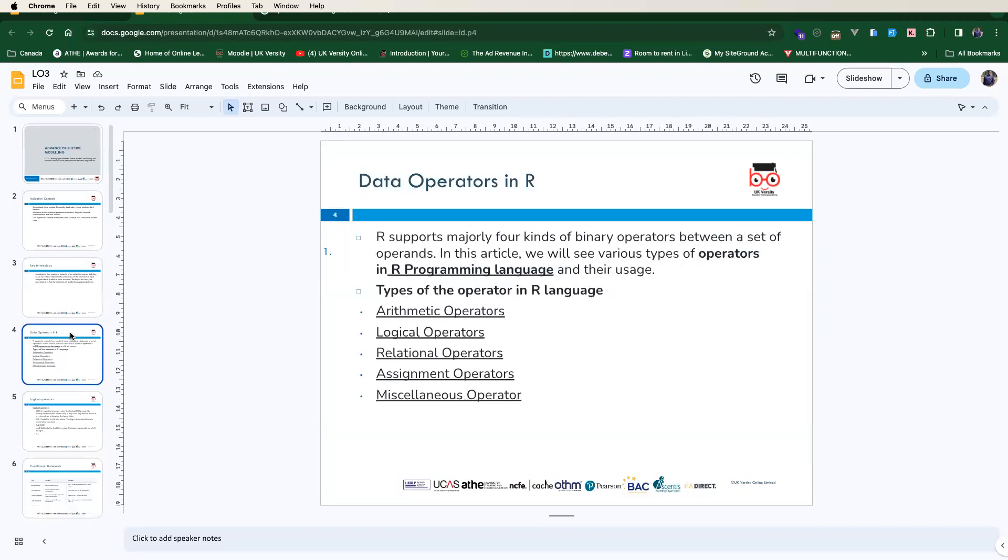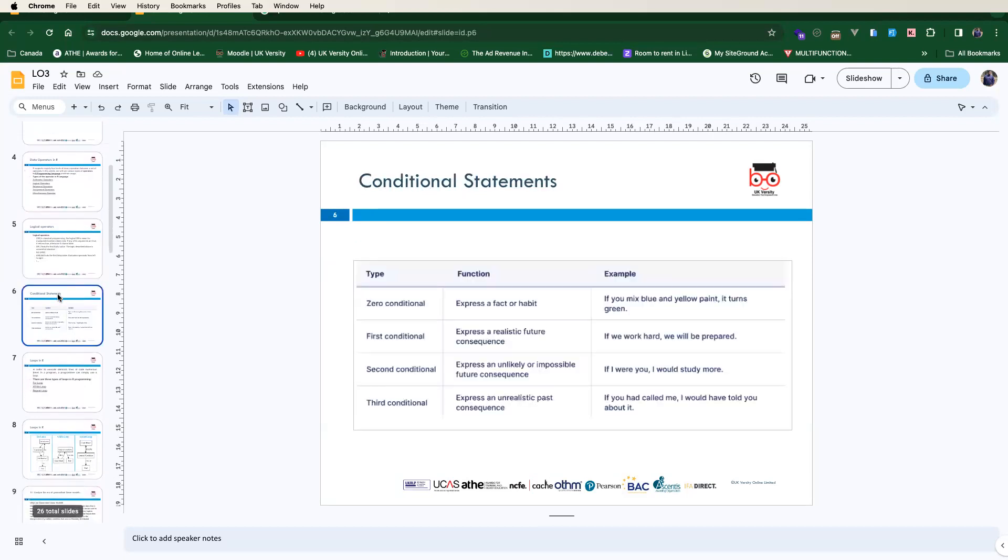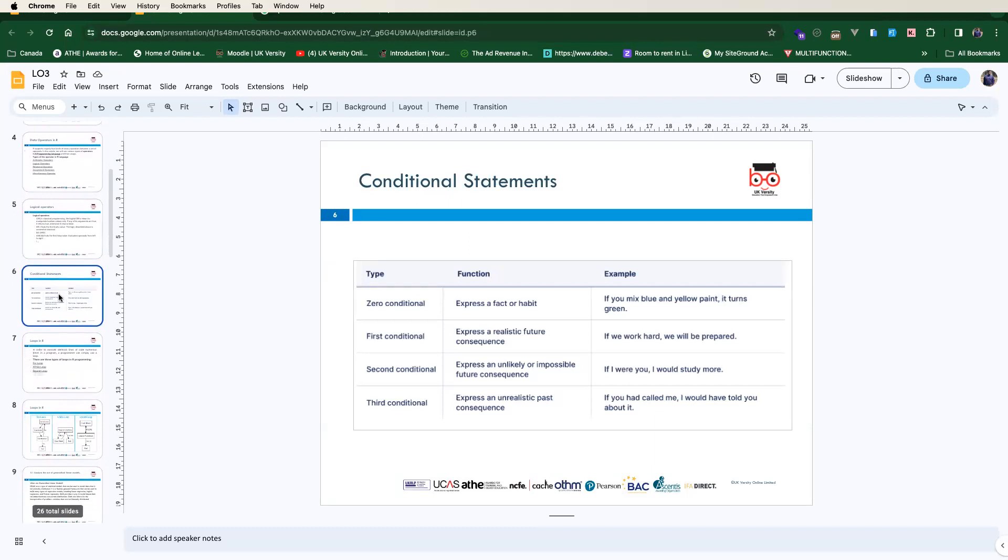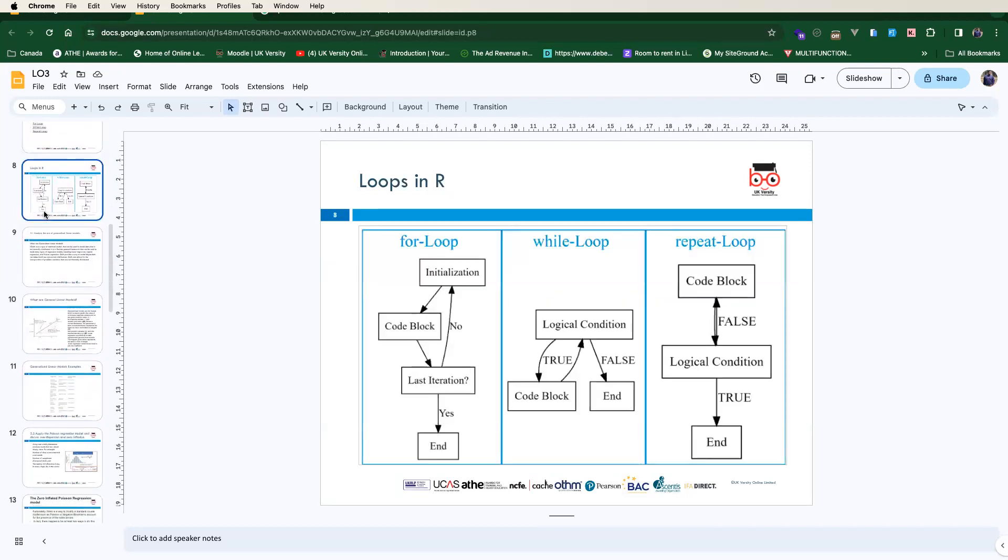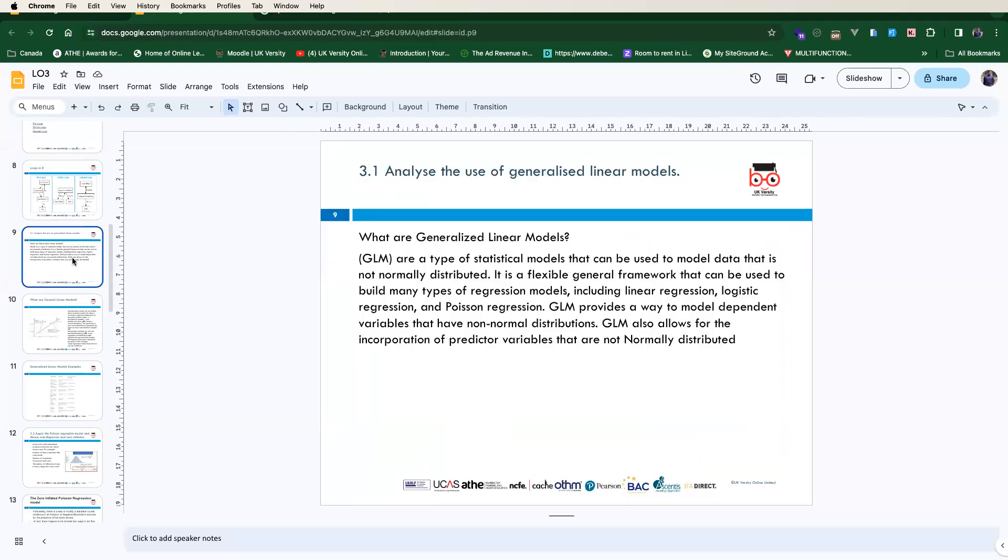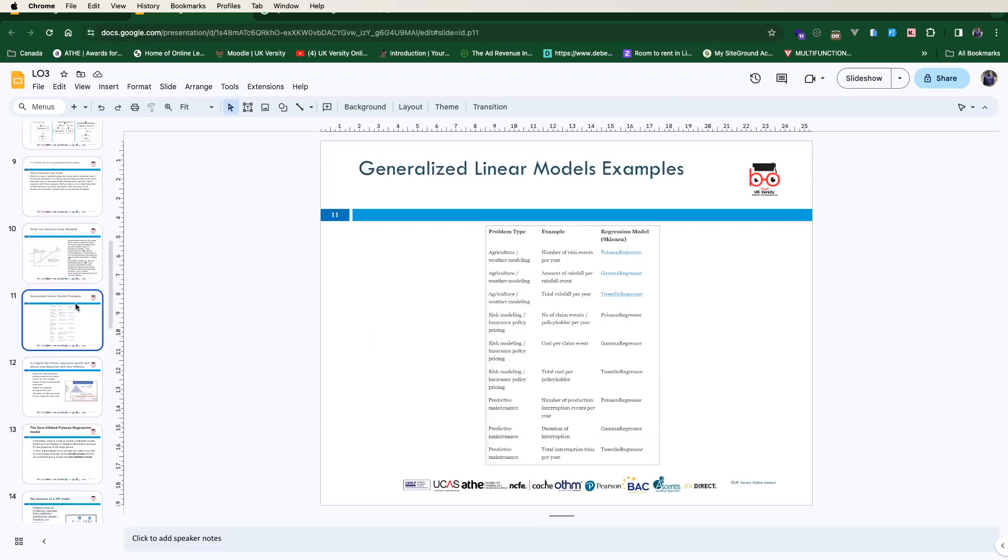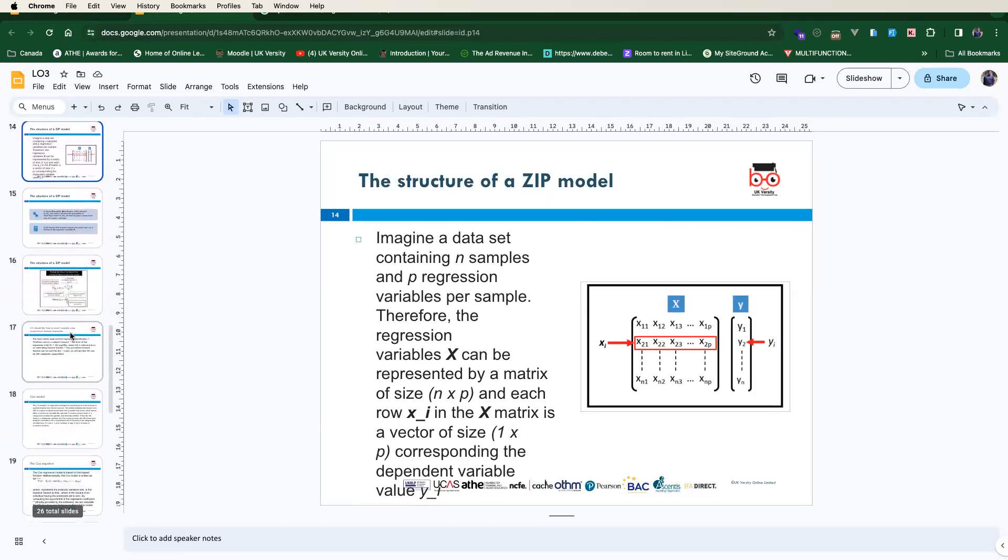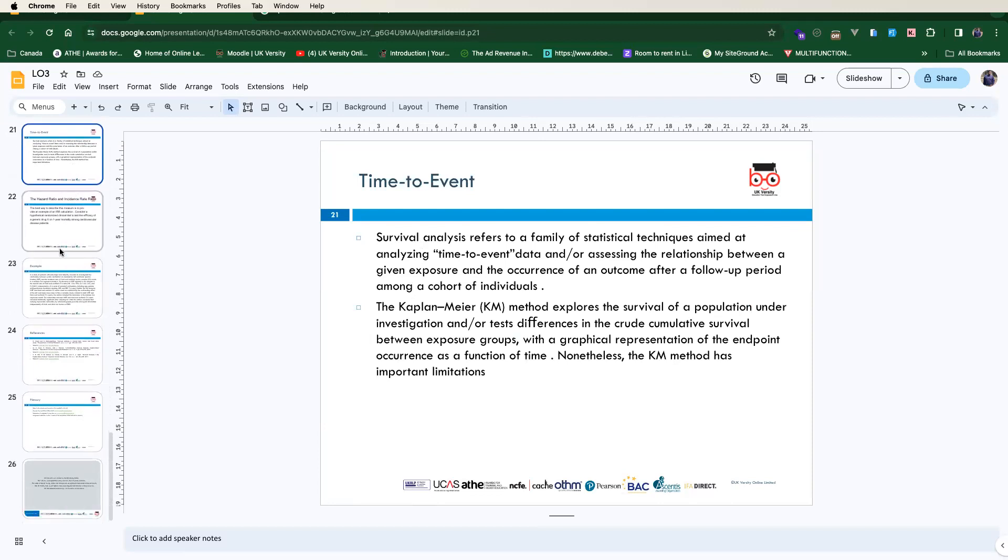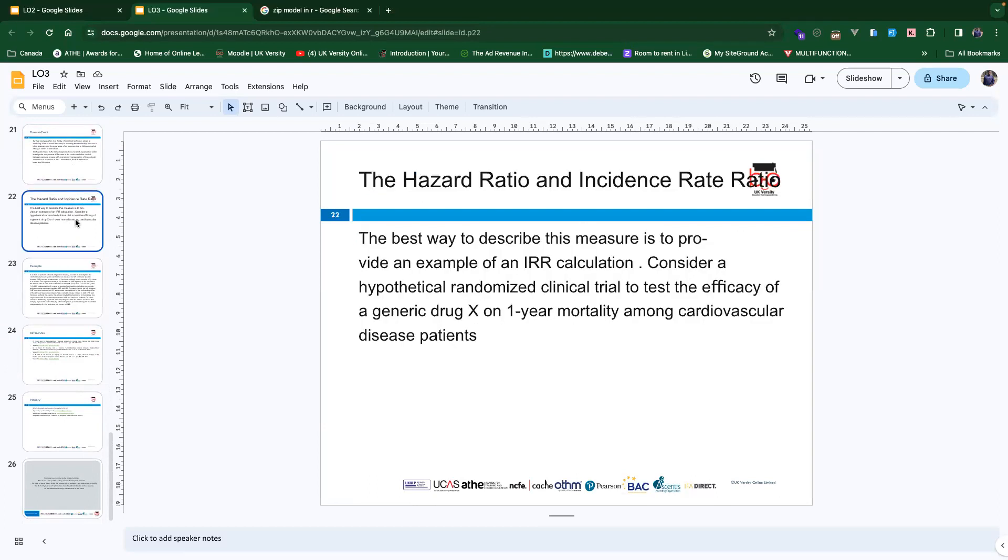We looked at the key terminology, data operators in R, logical operators in R, and conditional statements with examples. We looked at loops in R, which includes for loop, while loop, and repeat loop. We looked at the flowchart showing the differences between them, and then we moved to analyzing the use of generalized linear models. We looked at what general linear models are, we looked at examples, we looked at the structure of ZIP model among other things, and then we looked at time to events. Lastly, we had an example from an author about hazard ratio and incidence ratio.